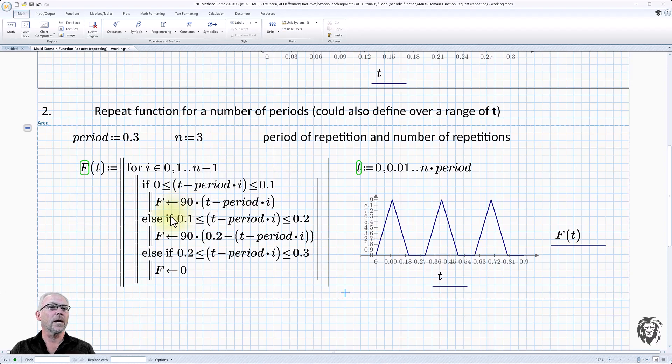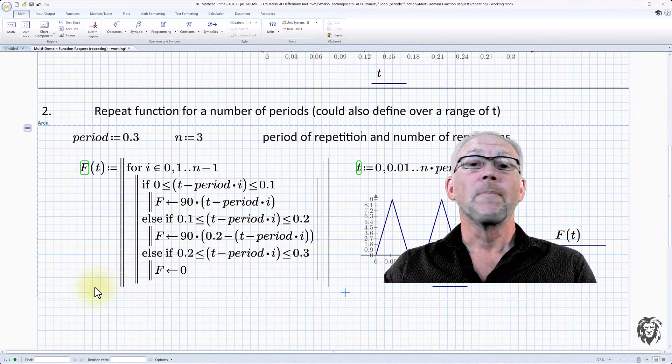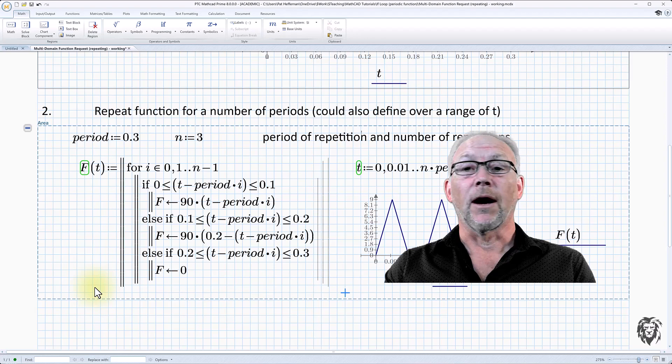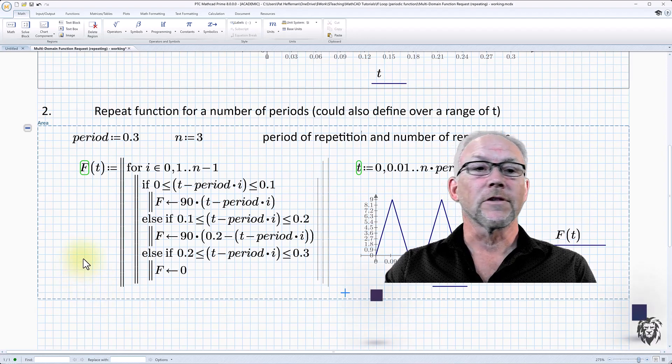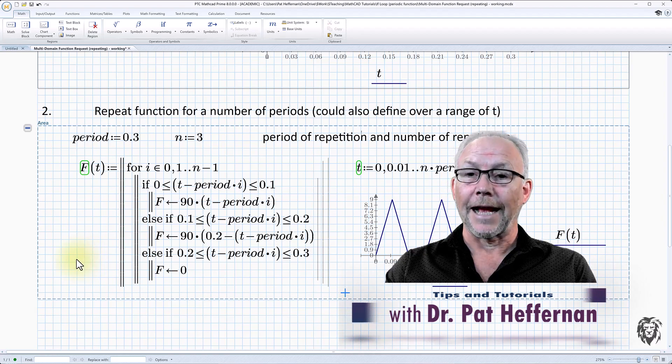I'm going from zero to 0.1, 0.1 to 0.2. I could do those as functions of the period, and I could make this more generic and more adaptable if I wanted to. But this seems to answer the question, so I think I'm going to leave it there. And hopefully that was useful to you, and it answers the question that you were asking.